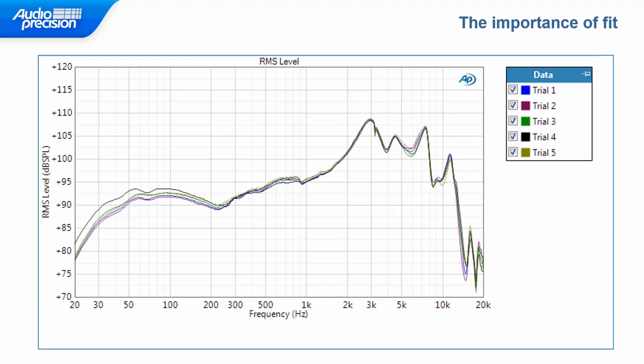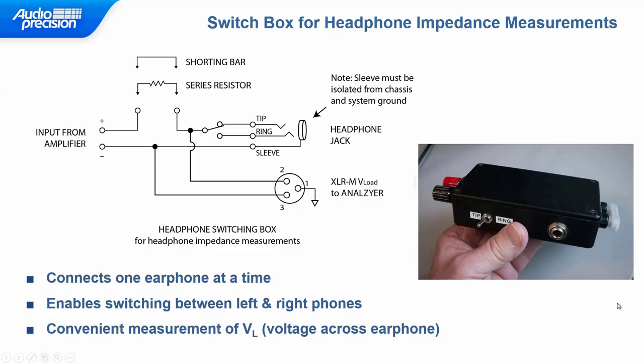A note about the importance of fit: when testing headphones and earphones, the fit of the earphones on the test fixture can make a big difference to the measured frequency response, especially at low frequencies. It's good practice to make several measurements wherein the headphones are refit to the test fixture each time, and then average the results using a power average. Regarding headphone impedance measurements: in most headphones, the left and right earphones share a common ground, so it's best to measure one earphone at a time. We made a switch box to enable switching to one headphone or the other, with a male XLR connector for sensing the voltage across the earphone.